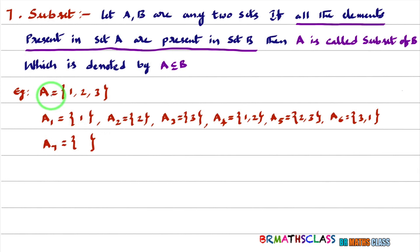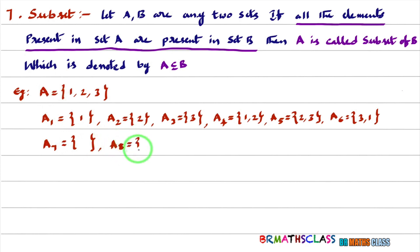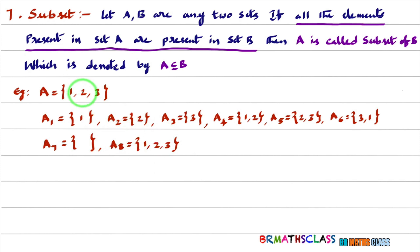And observe set A8, which is the set A itself. Is it a subset of A? Yes, of course — all elements present in A8 are present in A. So every set is a subset of itself. Whatever sets I have written here, all are subsets of A. Now we will learn important notes related to subset.